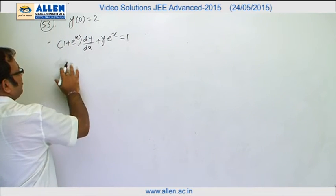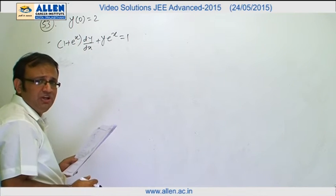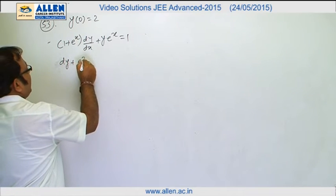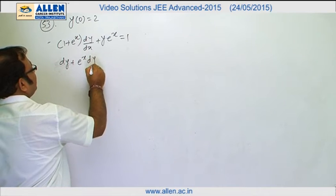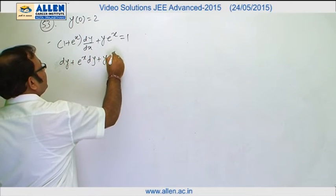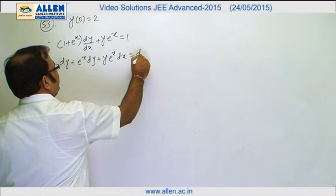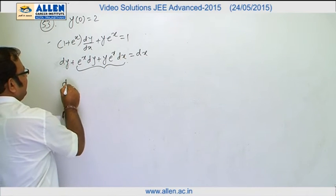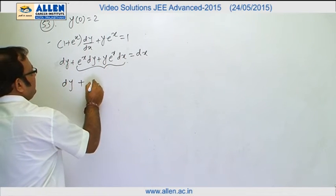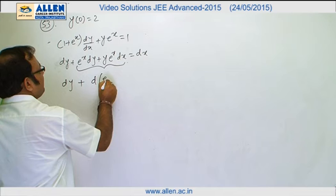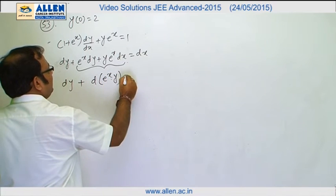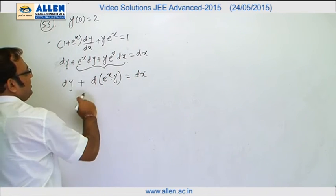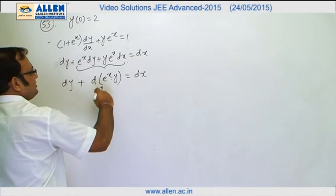We can open up the bracket and just try to adjust exact differential equation here. We can say this is dy + e^x dy + ye^x dx = dx. If you see this carefully, this becomes dy + d(e^x y) = dx. See that the exact is this: e^x dy + ye^x dx.